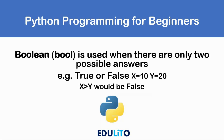Finally, boolean — or bool as it is written in Python — is used when there are only two possible answers, for example true or false. In this example, if x equals 10 and y equals 20, then x greater than y would be false.